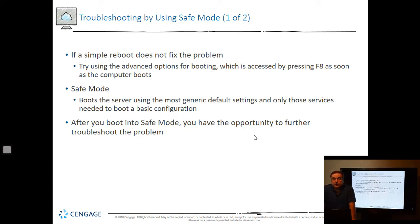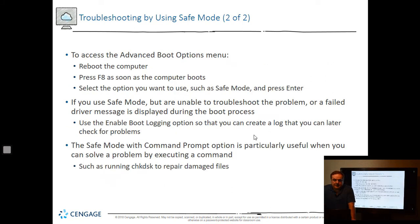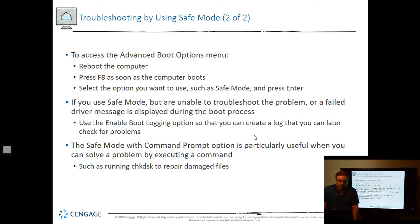If a simple reboot does not fix the problem — and that would be on a workstation, not a server — you can boot into safe mode. After you boot into safe mode, you have the opportunity to further troubleshoot the problem. Only reboot the server if you get approval from the bosses and department heads. You can access the advanced boot options menu by pressing F8, though F8 doesn't always work on all computers. Other times you'll have to boot from a DVD or use MS Config if the server is still running but not running properly. If you're unable to troubleshoot the problem, you can use the enable boot logging option to create a log that you can later check for problems, or send to Microsoft for assistance.